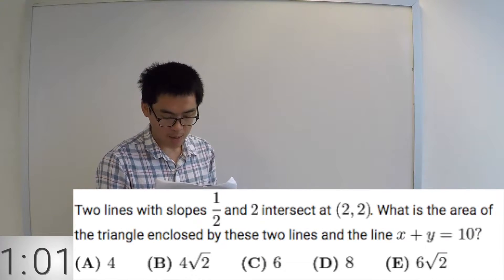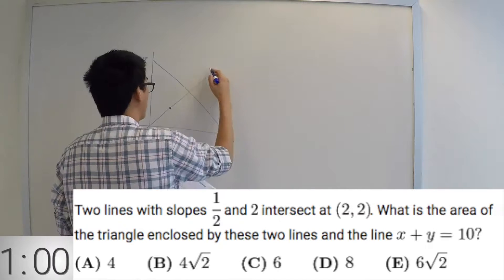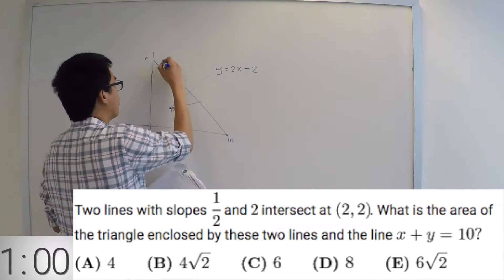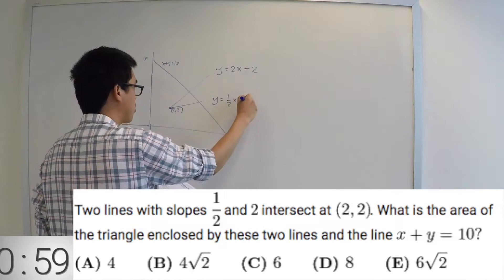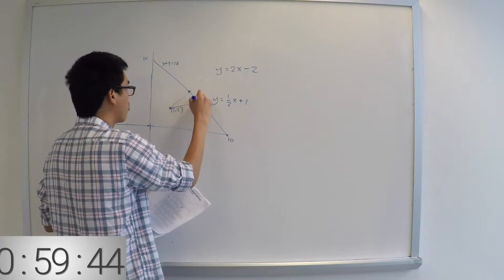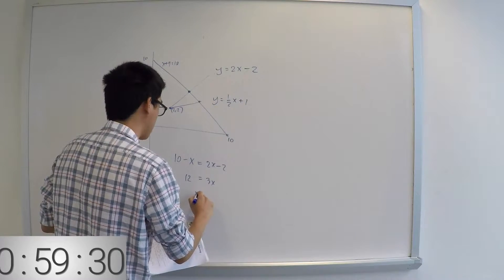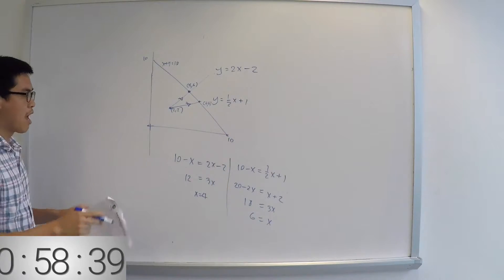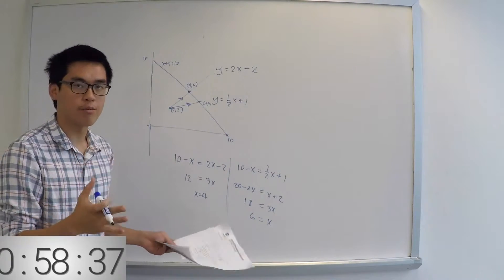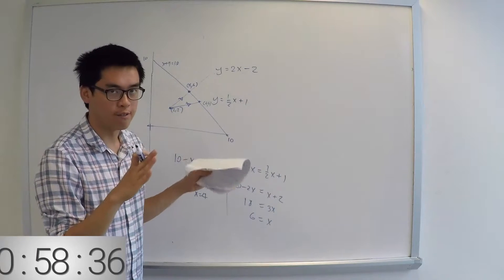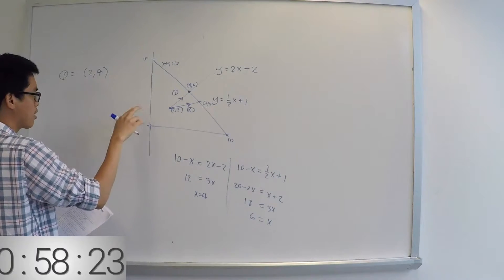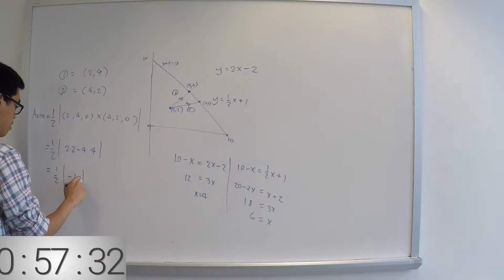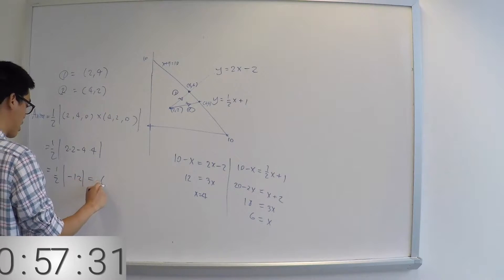Two lines of slope one-half: so this is x plus y equals 10 plus 1. For the two points, x equals 4 and x equals 6. The area of the triangle is just the cross product of these two vectors — 4, 6 and 2, 4 — cross 4, 2, 0, so the area is 6.